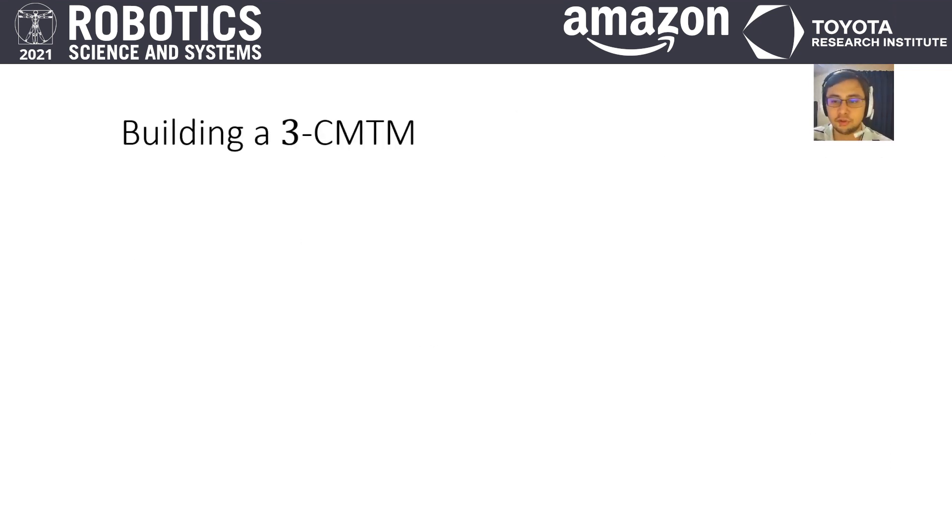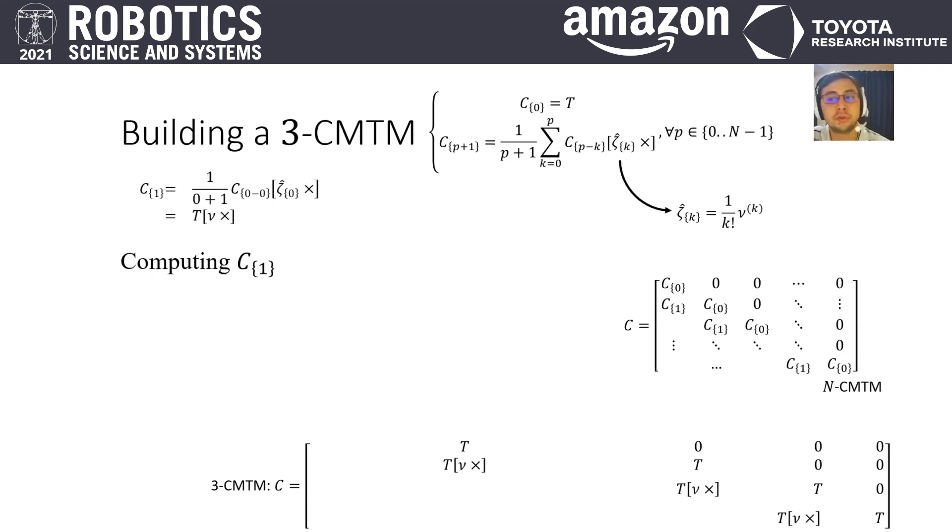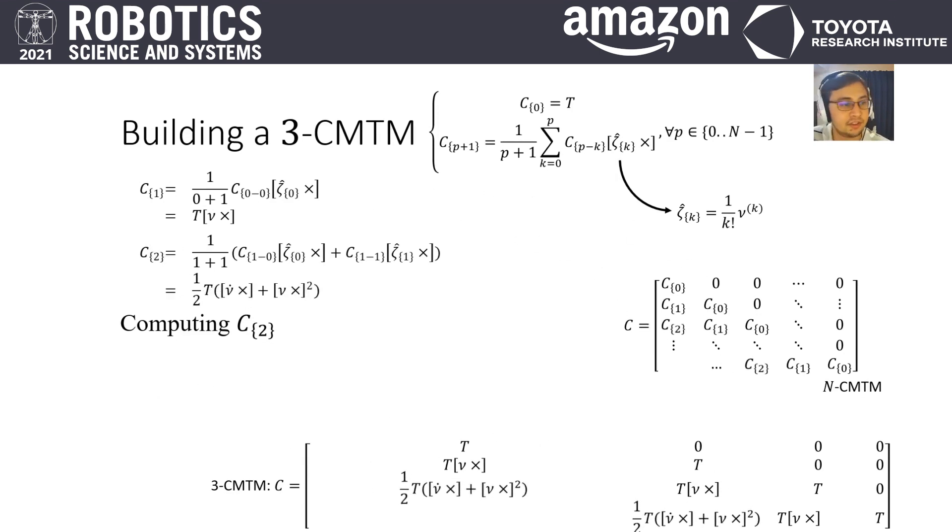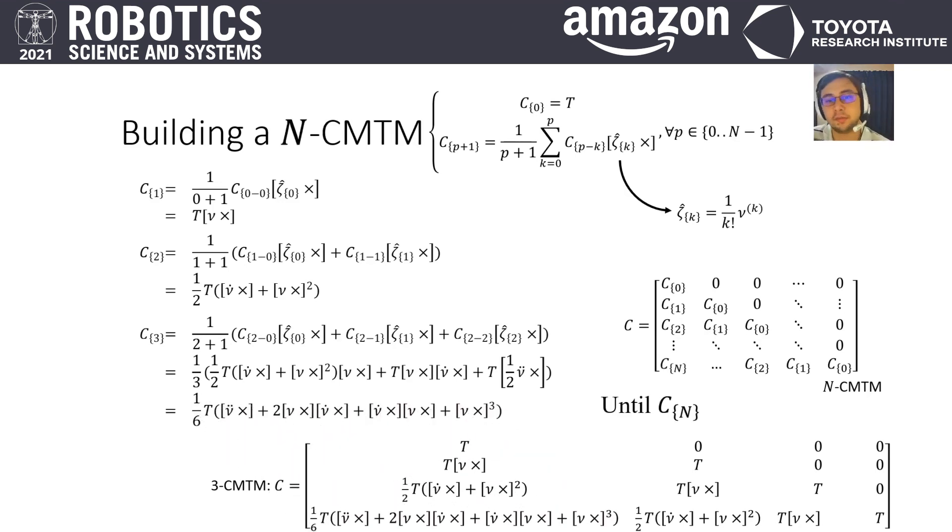Let's build a 3CMTM. A CMTM can be built recursively following this equation where the index bracket is a CMTM sub-matrix and where the hat notation simplifies the factorials. The sub-matrix of index 0 is defined by the classical transformation matrix. The following sub-matrix is computed from the recursion, and then index 2, and finally sub-matrix of index 3. And recursively, we can generate an NCMTM. So the NCMTM is a lower block triangular matrix composed of N plus 1 matrices.